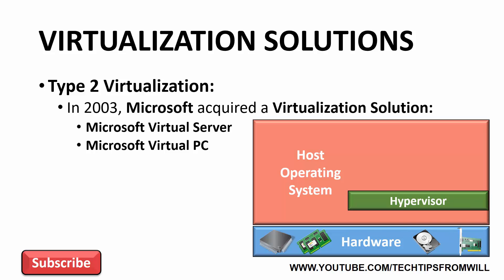Next, you would install Microsoft Virtual Server or Microsoft Virtual PC onto the host operating system. When you install either of these products, a small piece of software called a hypervisor is created within the host operating system. The job of the hypervisor is to allocate hardware resources from the host system to the virtual machines, a process commonly referred to as abstraction. In early virtualization solutions, the hypervisor, sometimes called the virtual machine monitor, operates within the host operating system and is essentially an application just like any other application.